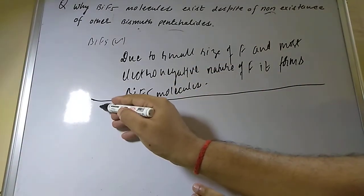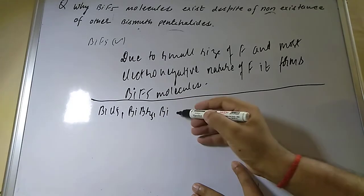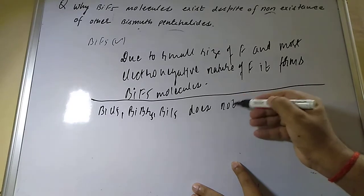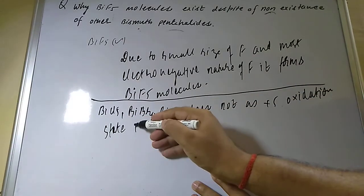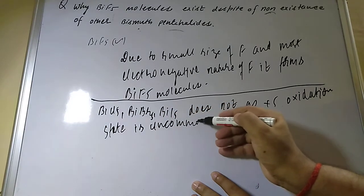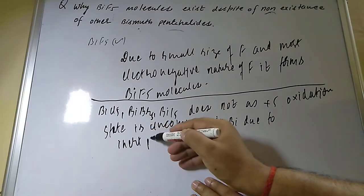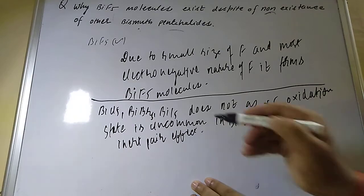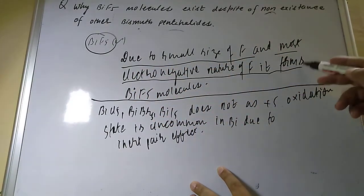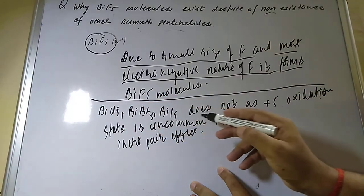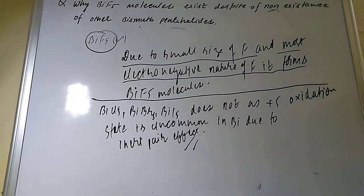To summarize: BiCl₅, BiBr₅, and BiI₅ do not form because the +5 oxidation state is uncommon in bismuth due to the inert pair effect. But BiF₅ is possible due to the small size and most electronegative nature of fluorine. Thank you so much for watching, friends.